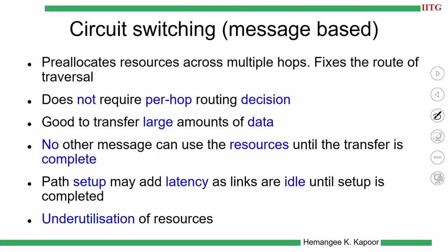The advantage of circuit switching is that we do not need routing decisions at every hop like in table-driven or dimension-order routing. The route is pre-decided, making switch design very easy. It is also good for very large amounts of data transfer — once a big route is established, you can send lots of data before releasing those resources.